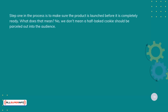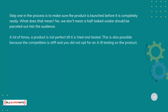Step 1 in the process is to make sure the product is launched before it's completely ready. We don't mean a half-baked cookie should be parceled out into the audience. A lot of times a product is not perfect till it is tried and tested. This is also possible because the competition is stiff and you did not opt for an A-to-B testing on the product.